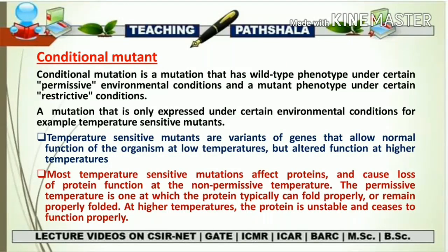Temperature-sensitive mutants work normally in wild-type form at low temperature. But if high temperature is provided, they express a mutant phenotype — we call them temperature-sensitive mutants. What is the reason? At normal conditions, protein formation and protein folding are normal. But at high temperature, these proteins are unstable, protein is denatured, and the function of any protein is altered or disturbed — as a result it becomes a mutant. With this, the concept of conditional mutants should now be clear.